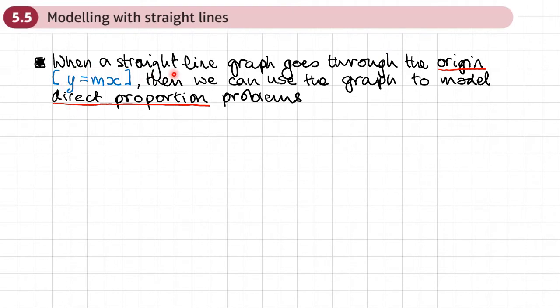So first of all, when a straight line graph goes through the origin, that means that the equation of the line is going to be of the form y equals mx.